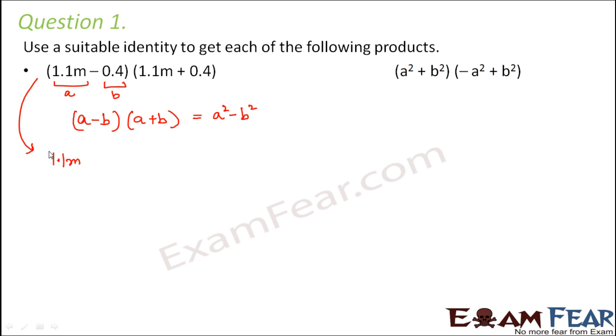1.1 into 1.1 would be 1.21m², minus 0.4 into 0.4 would be 0.16. So 1.21m² - 0.16 would be the answer.